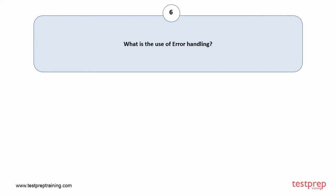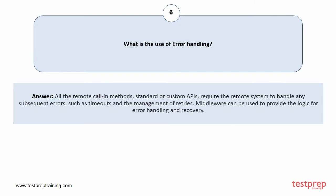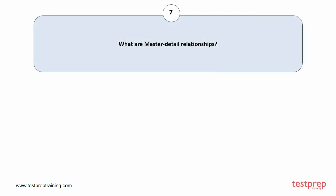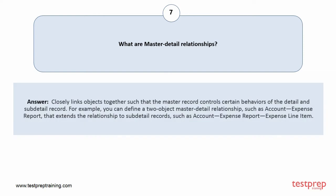Question number six: what is the use of error handling? All remote call methods, standard or custom APIs, require the remote system to handle any subsequent errors, such as timeouts and the management of retries. Middleware can be used to provide the logic for error handling and recovery. Question number seven: what are master detail relationships? Master detail relationships closely link objects together such that the master record controls certain behaviors of the detail and sub-detail record. For example, you can define a two-object master detail relationship, such as account and expense report, that extends the relationship to sub-detail records, such as account, expense report, and expense line item.